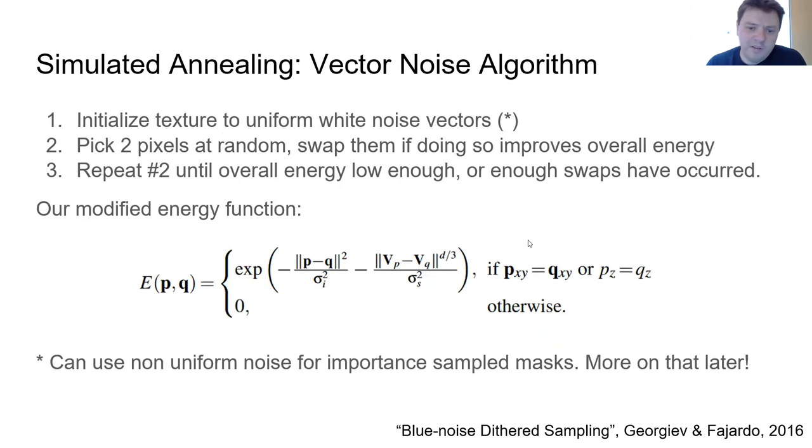And so for vector blue noise, we base our work on the blue noise gathered sampling paper by Giorgio Fajardo. And what we do, and this is simulated annealing, so what we do is we initialize the texture to uniform white noise vectors and then we pick two pixels at random and swap them if doing so improves the overall energy of the texture. And we repeat that until either the energy is low enough or we've reached a maximum swap count.